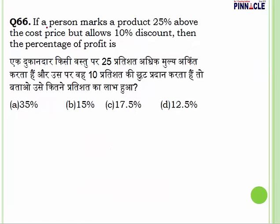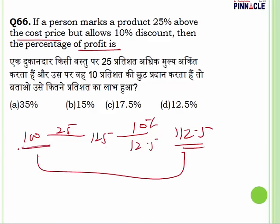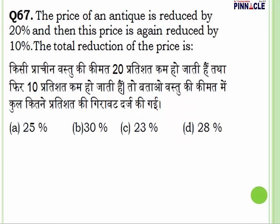Question number 66: a person marks a product 25 percent above cost price. Cost price 100 rupees, marked price 125 rupees. He then allows a 10 percent discount, which is 12.5 rupees. Selling price becomes 112.5 rupees. Profit equals 12.5 rupees on a cost of 100 rupees. Percentage profit is 12.5 percent. Answer is D.